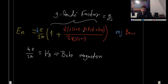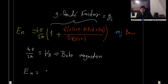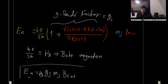The Landé g-factor is usually called g sub J, because it depends on J — and also on L, though if you know J you can usually determine L as well. Of course, m_J has two possible values: plus or minus.